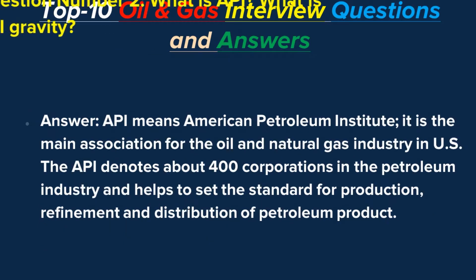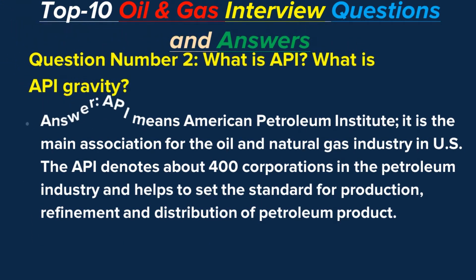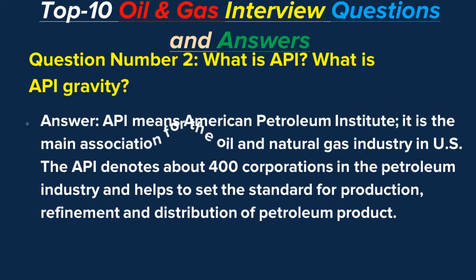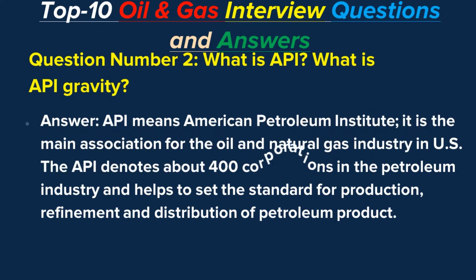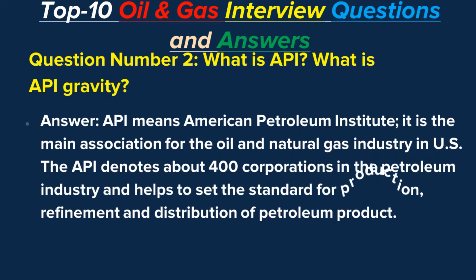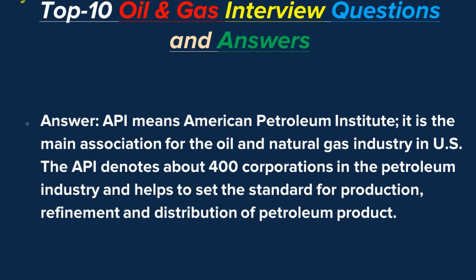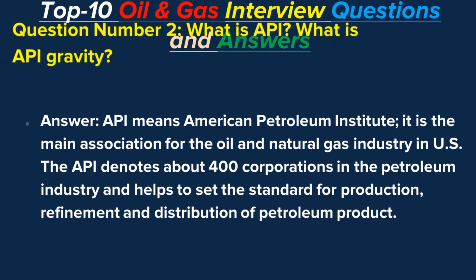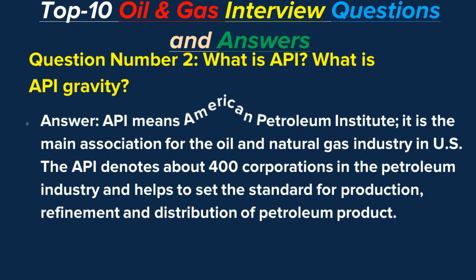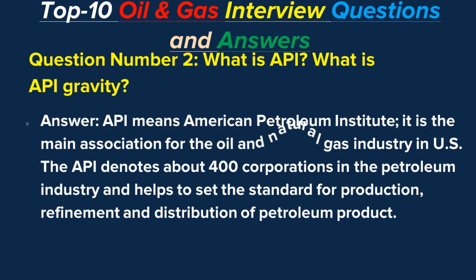Question number two: What is API? What is API Gravity? Answer: API means American Petroleum Institute. It is the main association for the oil and natural gas industry in the US. The API represents about 400 corporations in the petroleum industry and helps to set the standards for production, refinement, and distribution of petroleum products.